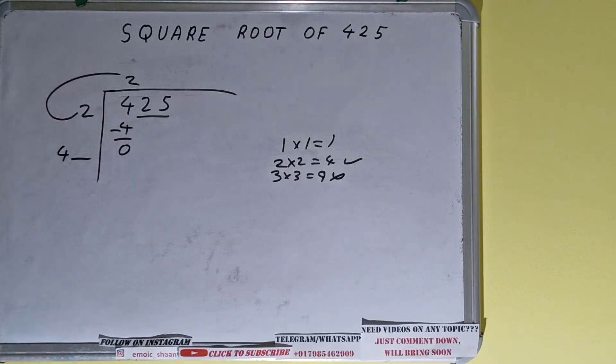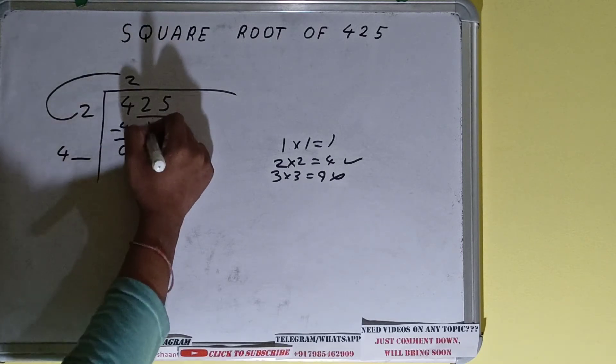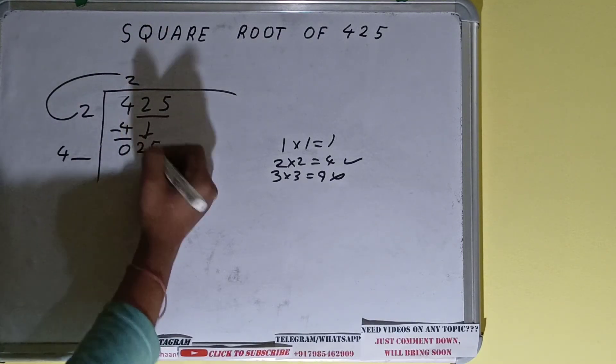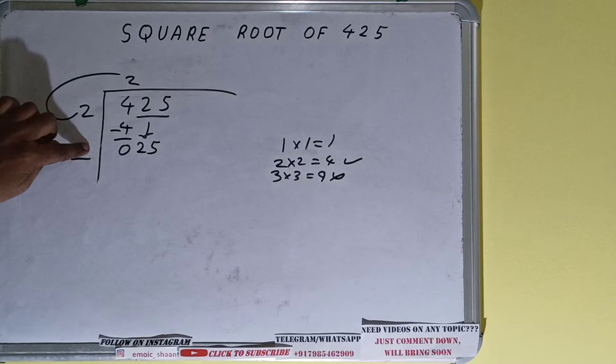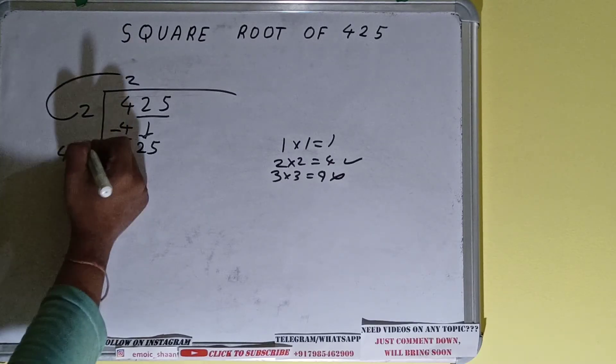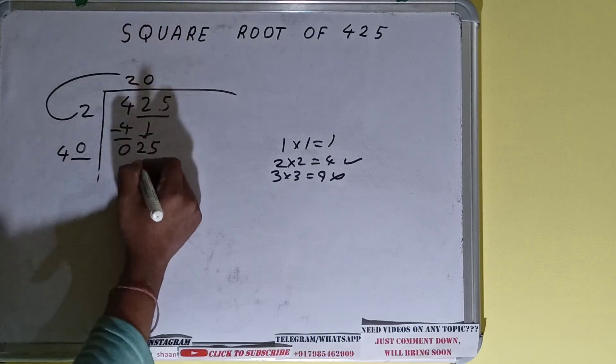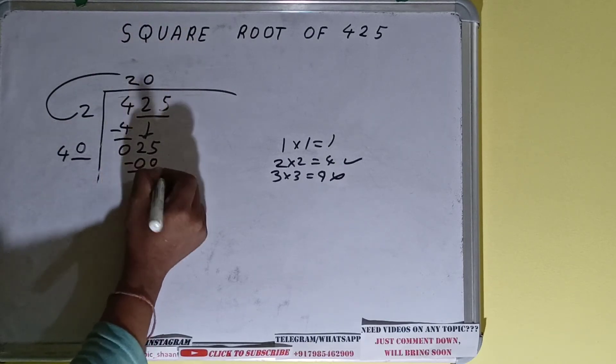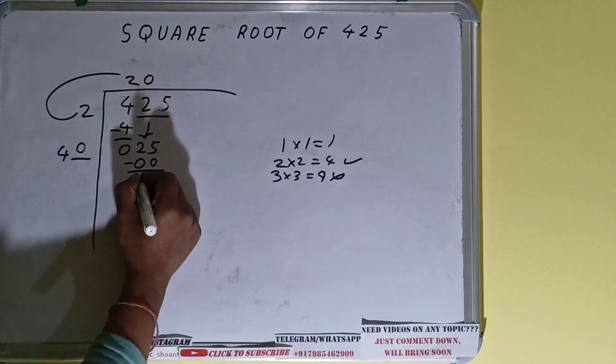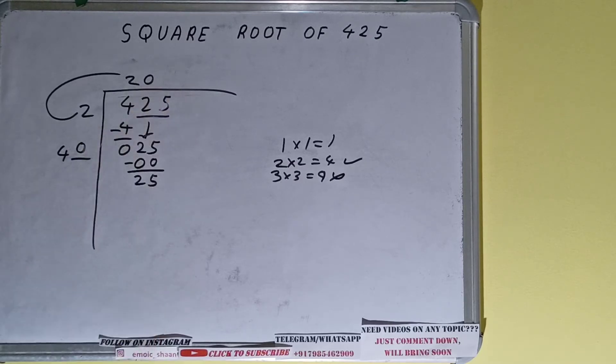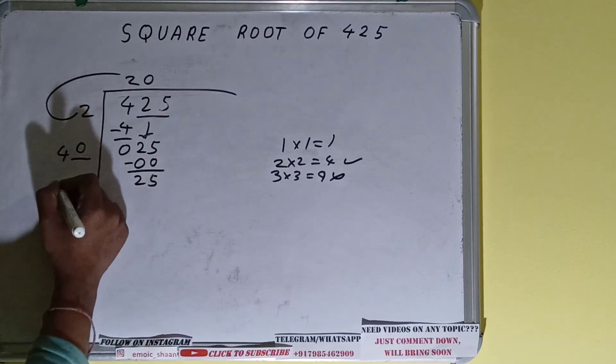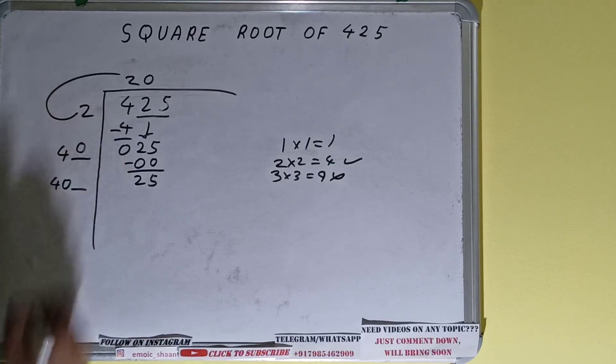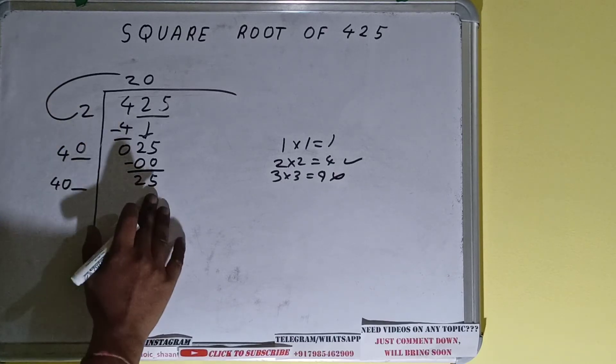This number we need to make it big so we can divide, so bring the next pair down and it will become 25. Now whatever number we write here we have to write here also. Zero will work - zero here and zero here will give 0 and leave 25 as remainder. Now 40 into 0, so add both - 40 plus 0 will be 40, and keep one digit extra.